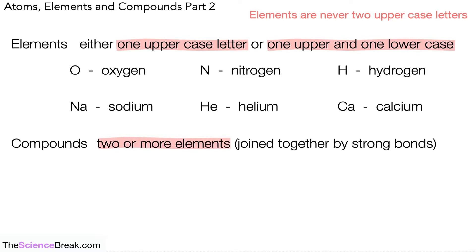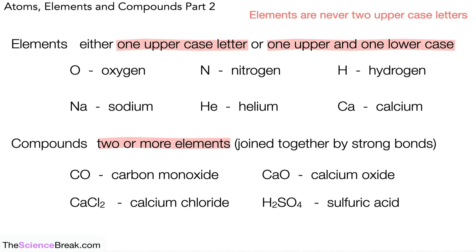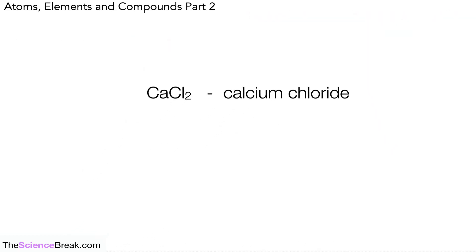Let's look at some examples. Carbon monoxide shows a capital C and a capital O. Calcium oxide is shown as Ca and O. We also have calcium chloride, and one final example — slightly trickier — which is sulfuric acid, H₂SO₄. You may notice some smaller subscript numbers that appear when we write compounds.